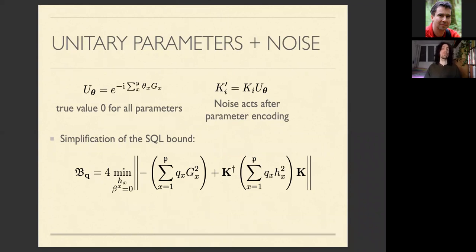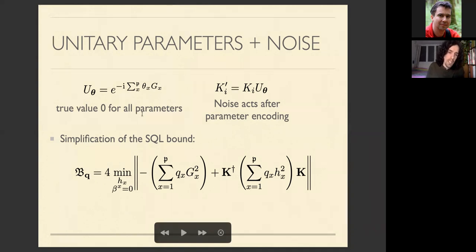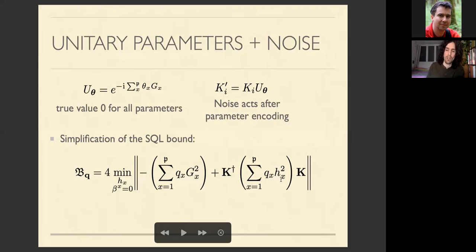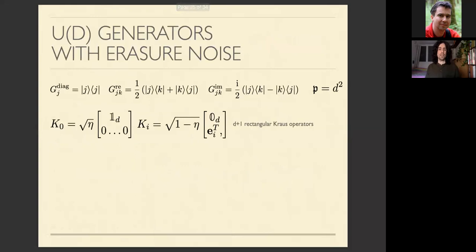Now let's move to applications. A paradigmatic application is encoding unitary parameters as e^{-i θ_x G_x}, where G are the generators. It is easier to work at the true value zero for all parameters, with noise acting after encoding. The total Kraus operators of the channel are just the unitary multiplied by the Kraus operators of the noise alone. With these assumptions the asymptotic SQL bound takes a simpler form — essentially a weighted sum of the squared matrices H that enter the bound.